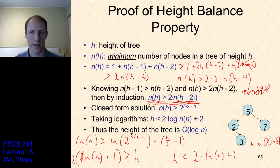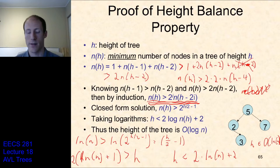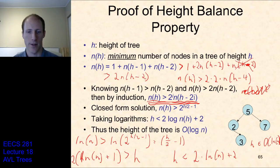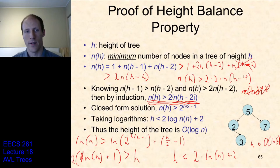This is important because we have not seen any data structure so far that has better than O(n) worst case search. Hash maps are all worst case O(n). Similarly, lookup in a linked list or unsorted vector is O(n). The only place we've seen O(log n) search before is binary search on a sorted vector. But a sorted vector doesn't let you add new elements in O(log n) time — adding a new element to a sorted vector takes linear time. That's what's unique about a balanced binary search tree: it lets you perform all these operations in logarithmic time.